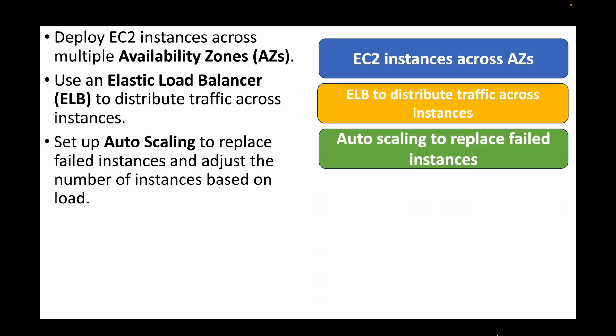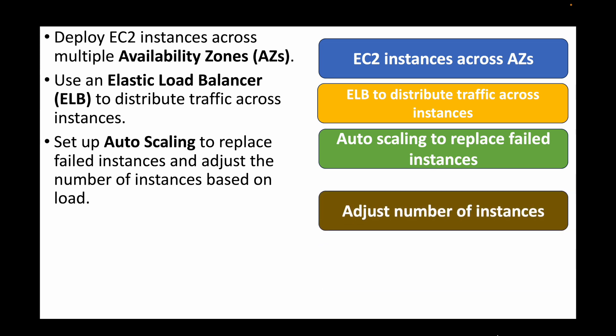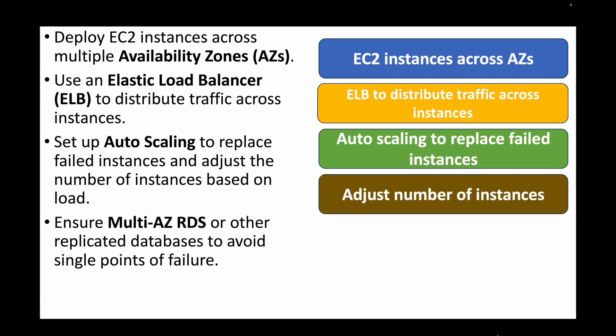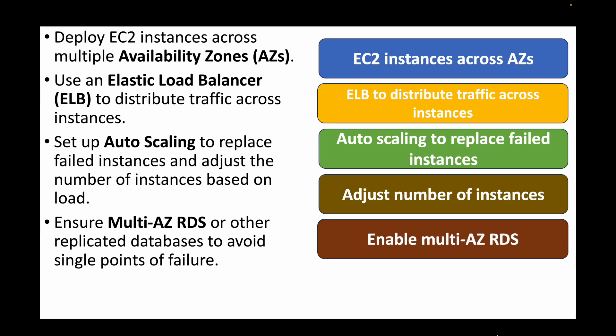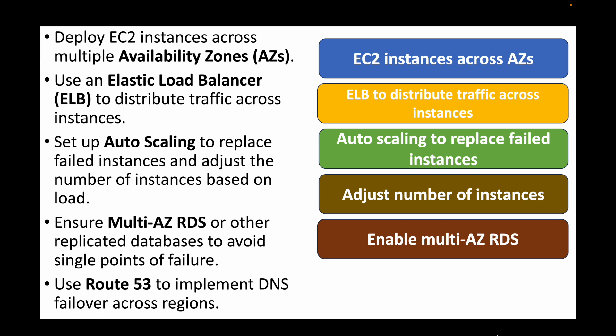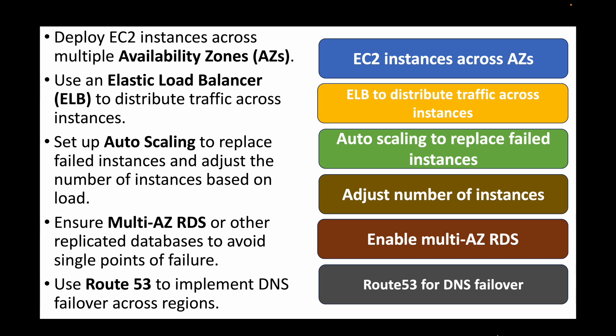You can also set up auto scaling to automate scaling up and scaling down of instances based on load or a defined threshold. Enable Multi-AZ RDS to make the database highly available and avoid any single point of failure. Finally, place the database behind Route 53, which acts as the DNS to allow users to access the application using a URL. So you have instances across multiple availability zones behind a load balancer, with auto scaling and Multi-AZ configured.